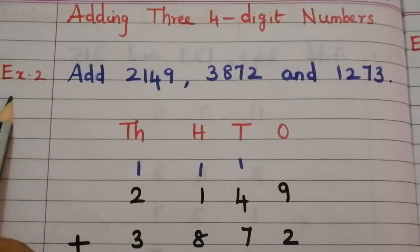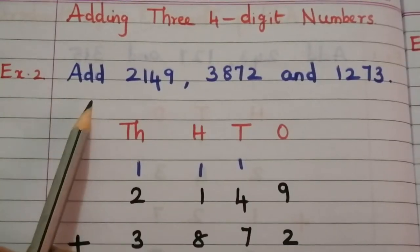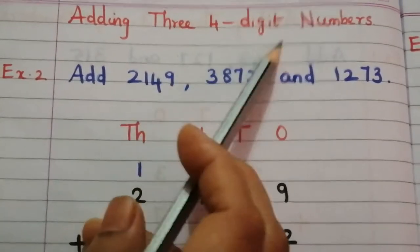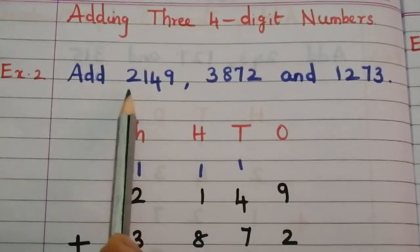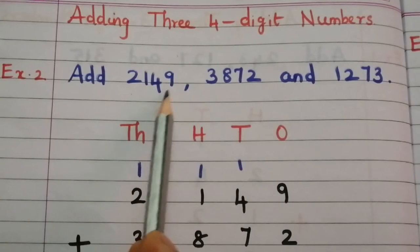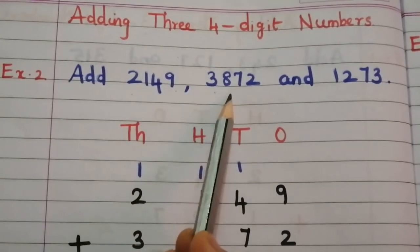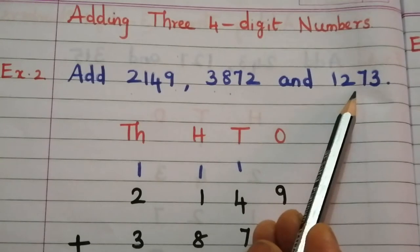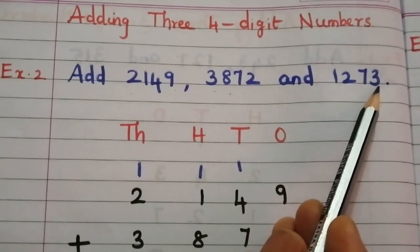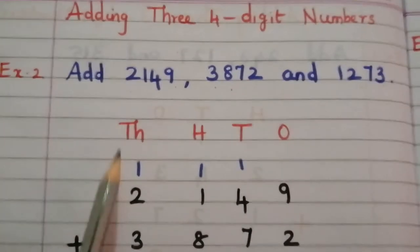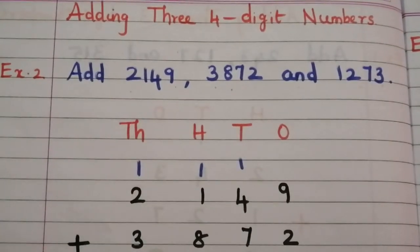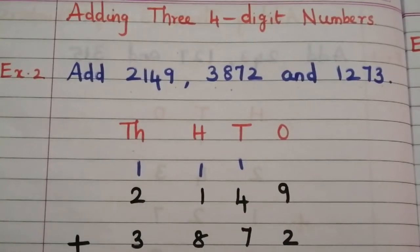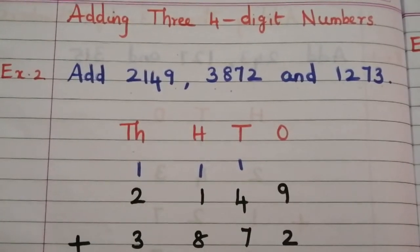Example 2 is an example of adding three 4-digit numbers. Add 2149, 3872, and 1273. Write all three numbers vertically, then write ones, tens, hundreds, thousands, and put the plus sign.